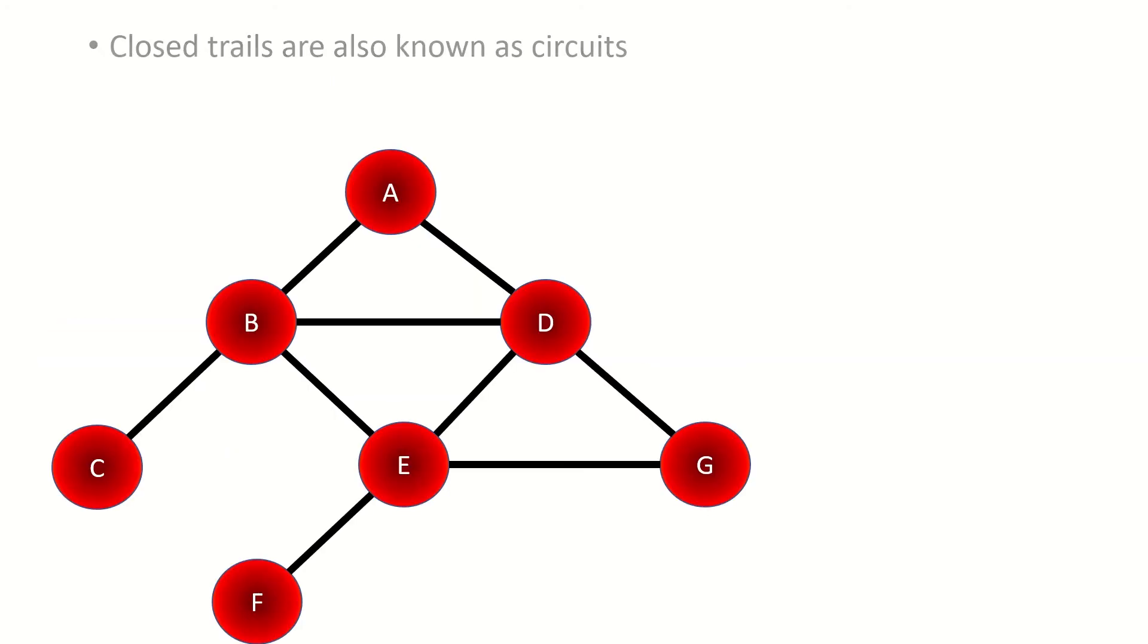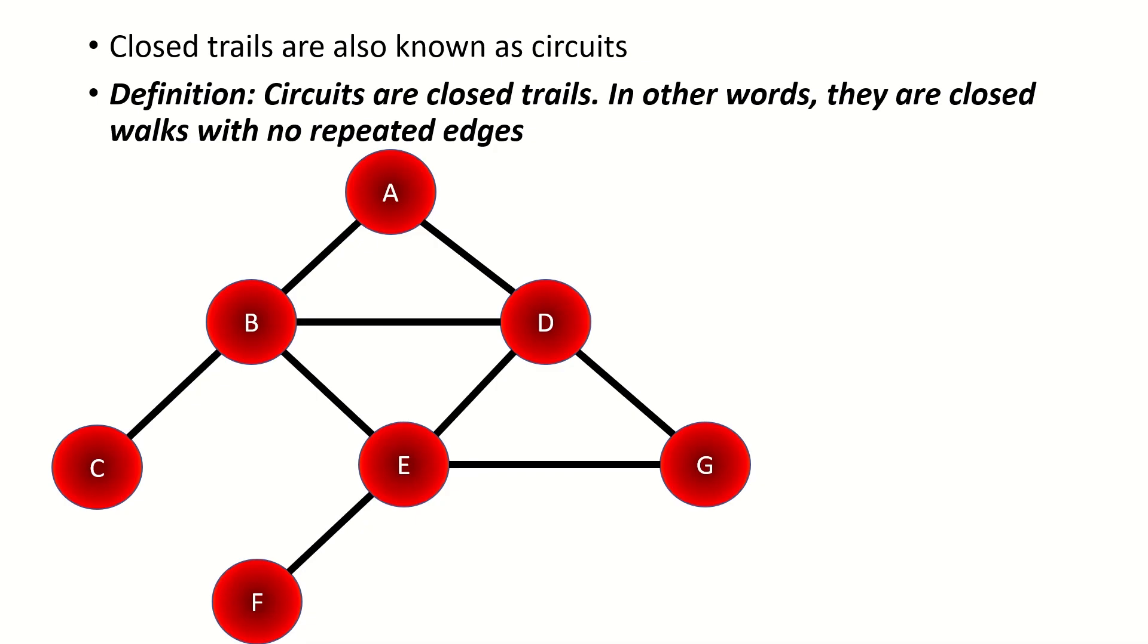Now you should know that a closed trail, that is a walk in which we do not repeat edges, and in which the starting and ending vertices are the same vertex, is known as a circuit. Again, since a circuit is merely a closed trail, we are still allowed to visit the same vertex more than once, but we cannot travel along the same edge more than once. Here's an example of a circuit: EGDABDE.